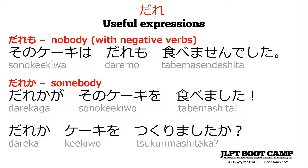Another example: 'dare ka keiki wo tsukurimashita ka.' You might notice that in these two examples, the first one uses the subject-marking particle 'ga,' and the second one doesn't. For 'dare ka,' you don't need a particle if it's easily understood from context. This might sneak up on you in the grammar section because you're looking for the 'ga' subject marker and it's not there — it's just not needed. For 'dare mo,' you actually can't add any particles after it; 'dare mo ga' doesn't make any sense, so 'dare mo' is usually by itself.